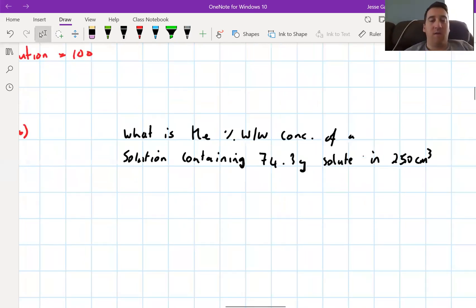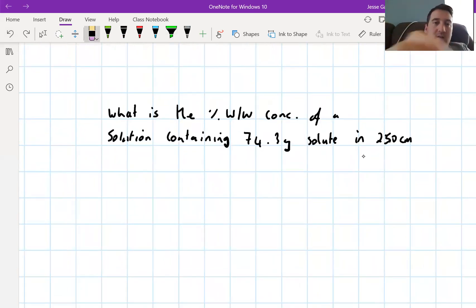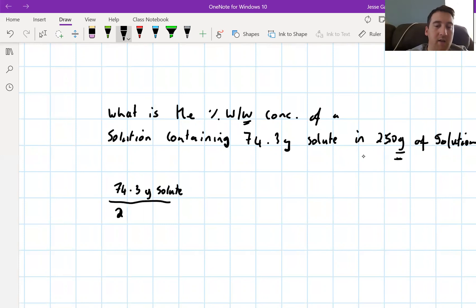So we write down what we're starting with. We have 74.3 grams of solute in 250 grams of solution. This is a percentage weight per weight concentration, so we need a weight of solution. We have 74.3 grams of solute over 250 grams of solution.